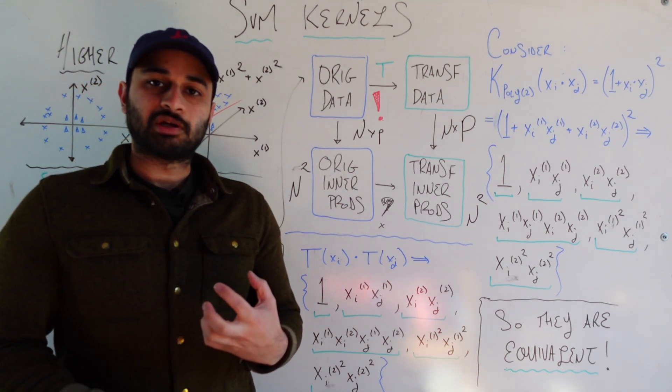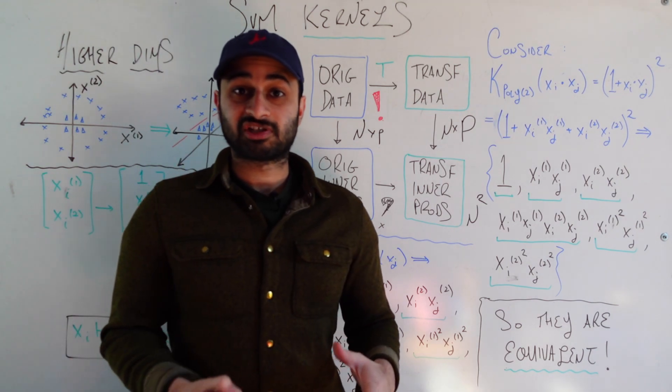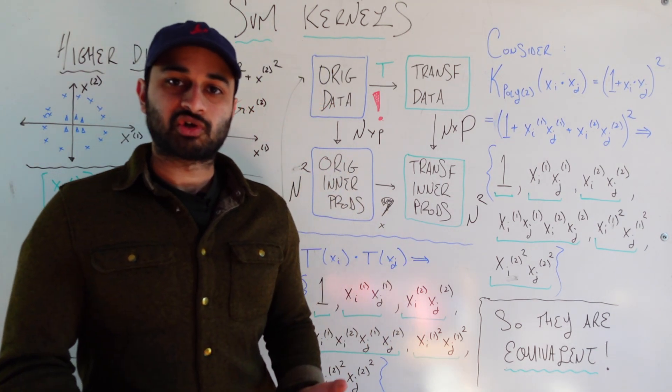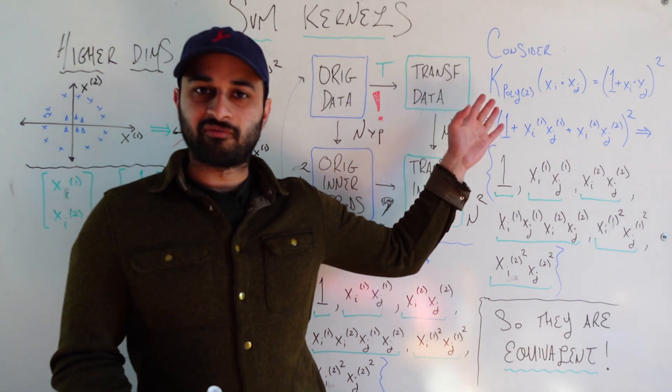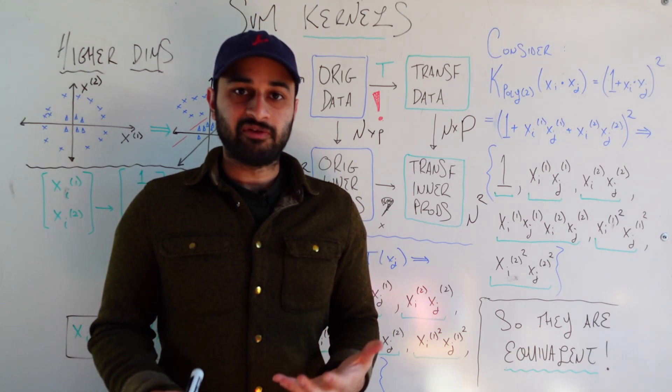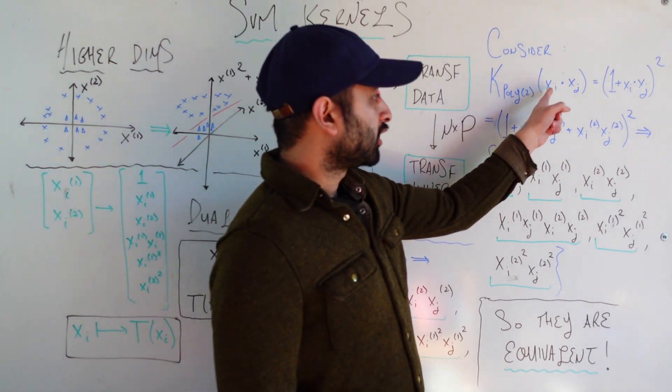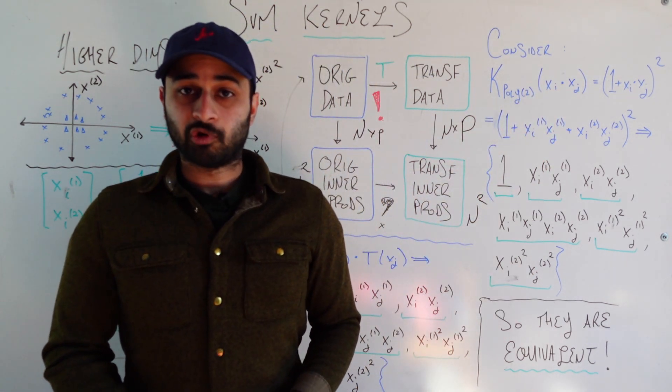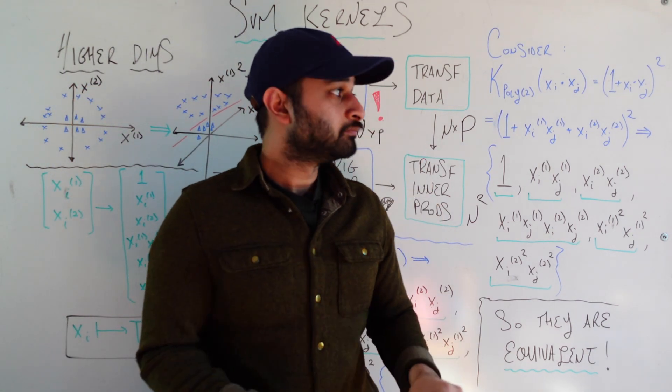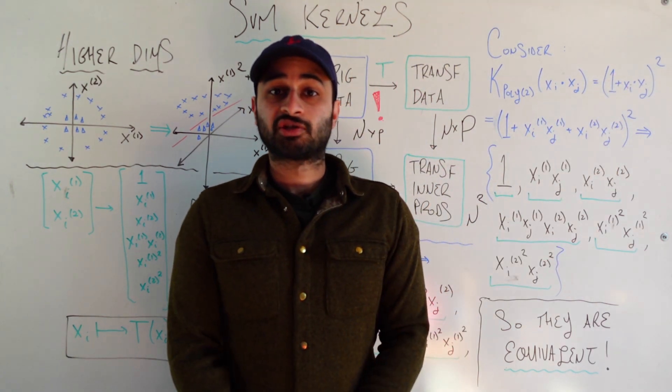So we ask ourselves the question, is there another way to get these exact six terms, which are going to give us the power of working in a high dimensional space, but without explicitly doing this transformation? Let's consider this magical function I've written up here called k poly 2 of xi dot xj. The first thing, even before I define this function for you, is that it's just a function of the inner products of the original data. So it's not doing any transformations using this T itself. That's the biggest thing to keep in mind as I talk here.